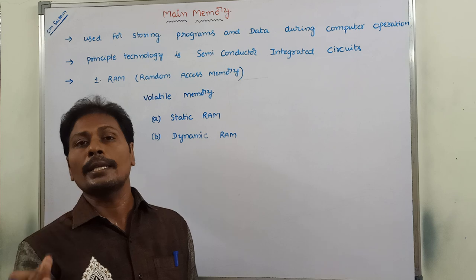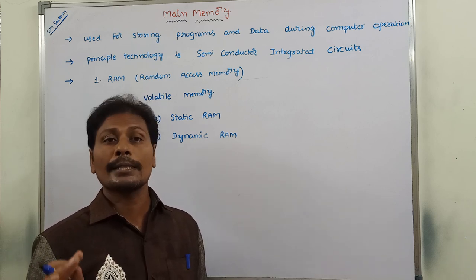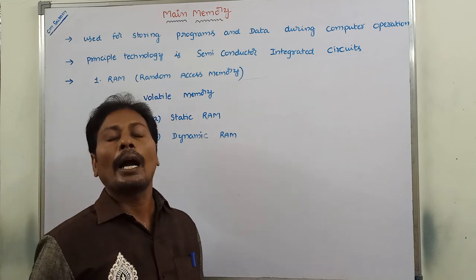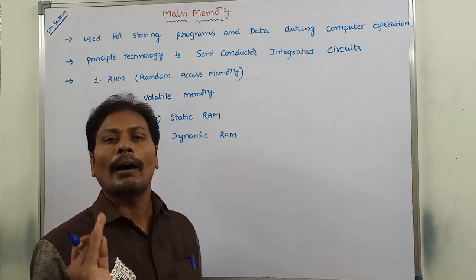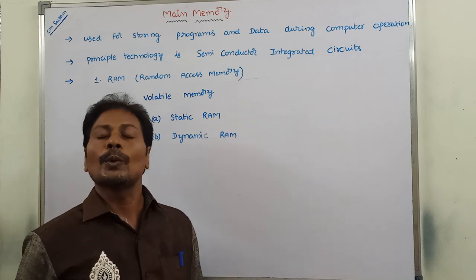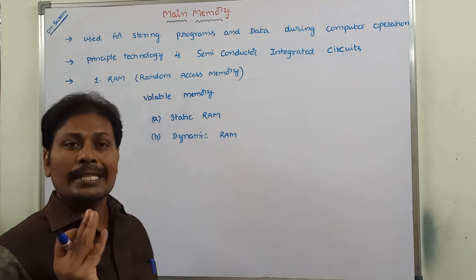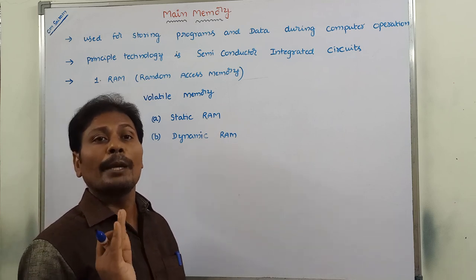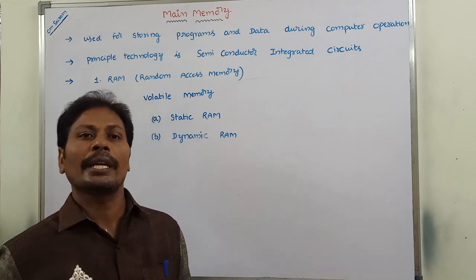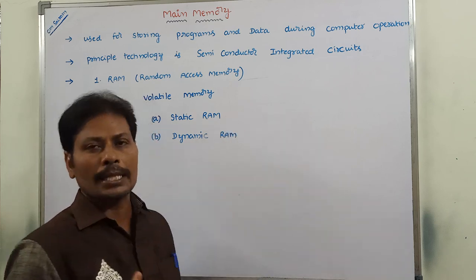Once the power is switched off, whatever content is stored in the Static RAM is simply erased. Static RAMs are easier to use and have shorter read and write cycles. The main application of Static RAM is used for implementing cache memory. When implementing cache memory, we have to use Static RAM only.